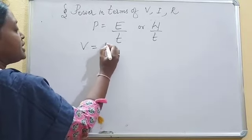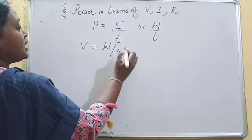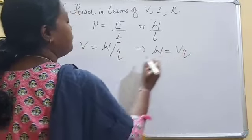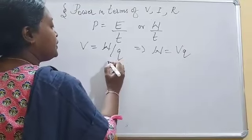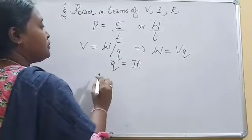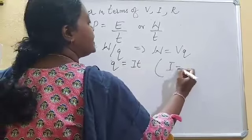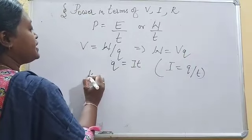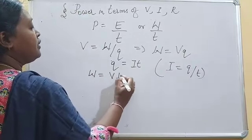According to the definition of potential difference, work done per unit charge, work will equal V into Q. In terms of current, Q equals I into T, as I equals Q upon T. Therefore, we can write W equals V, I, T.